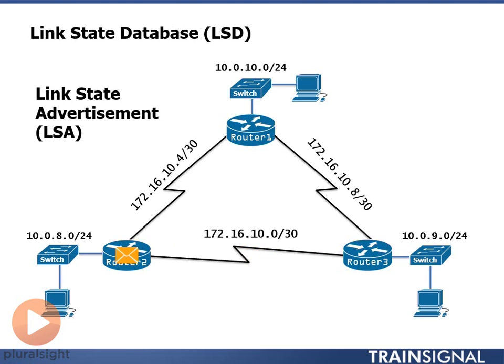These LSAs are propagated from all routers to all neighbors, advertising information about all directly connected networks. This is the key to dynamic routing — we want our router to advertise to other routers which networks we can reach, and let the topology allow other routers to build their link state database. This contrasts with static routing, where we manually build routes for networks our router doesn't know how to reach. In dynamic routing, we tell the router which networks to advertise, and the routing protocol informs the other routers.